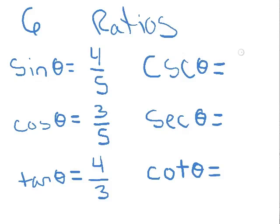The way you figure these out is you just look at the one it corresponds to and you just flip it, it's that easy. So cosecant is the opposite of sine, and so that's 5 over 4. Secant is the opposite of cosine, so that's 5 over 3, and cotangent is the opposite of tangent, that's 3 over 4.